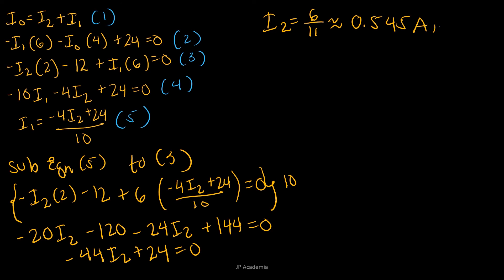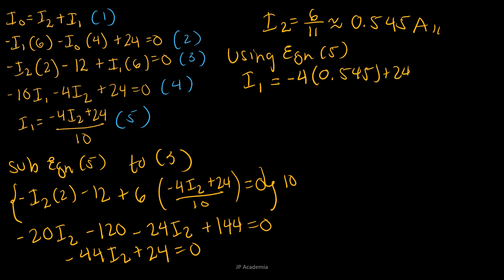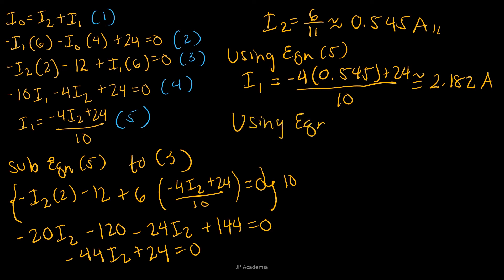Now that we know I2, we use equation 5 to find I1: I1 = (negative 4 times 0.545 + 24) / 10, which gives approximately 2.182 amperes. Finally, using equation 1 (the junction rule), we get I0 = I1 + I2, which is approximately 2.727 amperes. And that's it for this video, thank you!